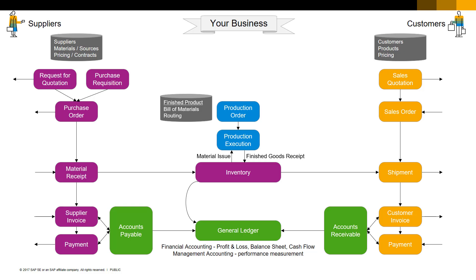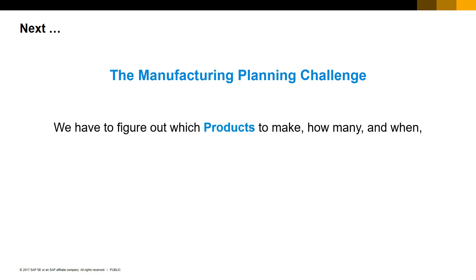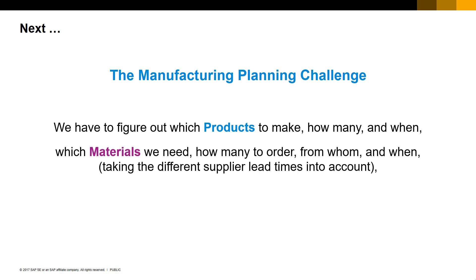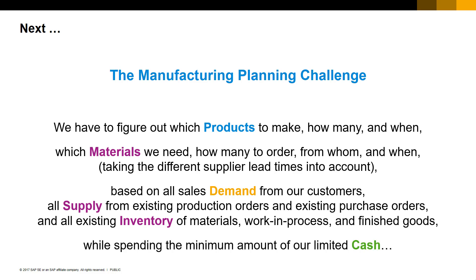So now we have everything we need to run a manufacturing business — or do we? Let's imagine you're running a manufacturing business. We have to figure out which products to make, specifically how many of each, and when to have them ready in inventory to ship to customers. Then we have to figure out which materials we need, how many of each, where to buy them, and when to have them ready so we can issue them to production. This gets tricky because each finished product could have dozens of parts, each with a different supplier and lead time. All materials have to be in inventory before we can start production. We have to figure out all the production orders for the plant, accounting for customer demand, existing production and purchase orders, and all existing inventory of materials, work in progress, and finished goods — while spending the minimum amount of our limited cash.